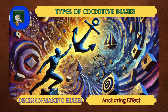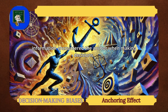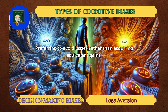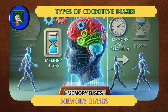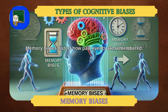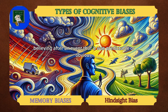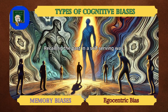Anchoring Effect: relying heavily on the first piece of information encountered — the anchor — when making decisions. Loss Aversion: preferring to avoid losses rather than acquiring equivalent gains, as highlighted in Prospect Theory. Hindsight Bias: believing after an event that it was predictable or obvious. Egocentric Bias: recalling the past in a self-serving way, exaggerating one's role or importance.